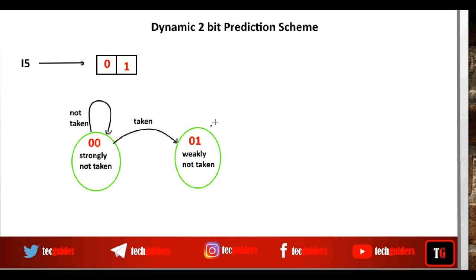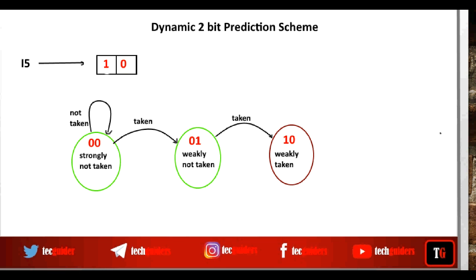Once more if our prediction goes wrong — again if the branch is taken — we move to the weak state predicting that the branch will be taken. So with 2 mispredictions, we are moving from the predict not-taken state to the predict taken state. In the previous 1-bit prediction case, with a single misprediction we moved from the not-taken state to the taken state. Here we wait for 2 mispredictions.